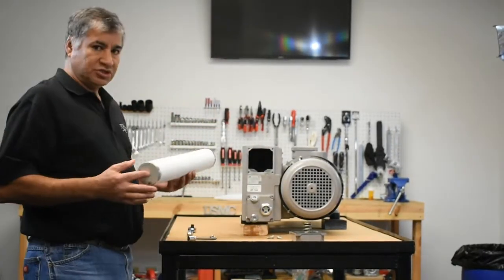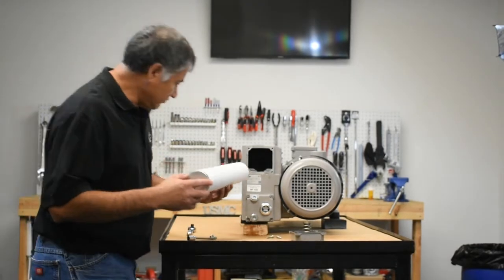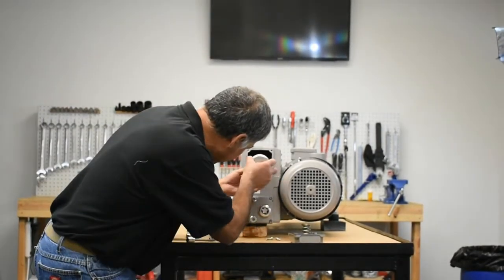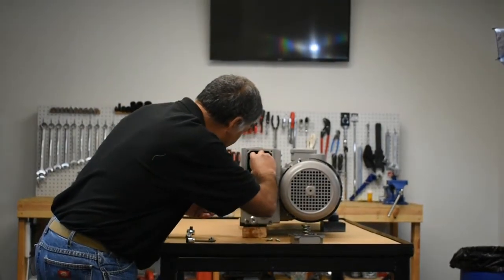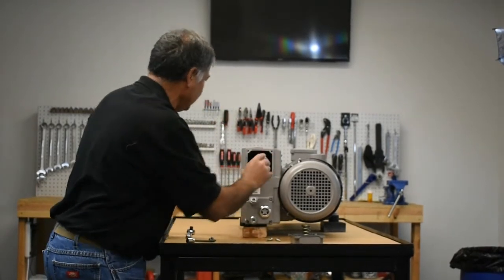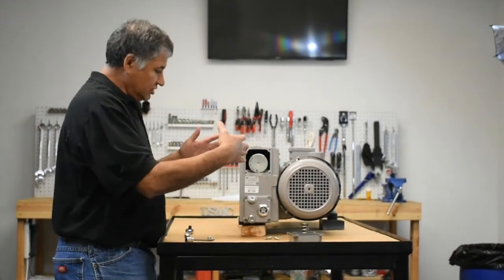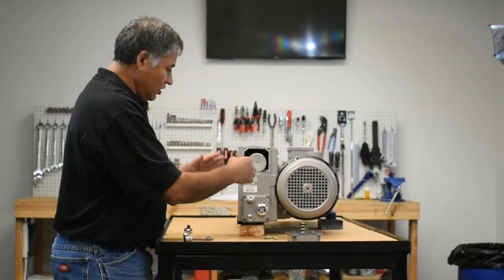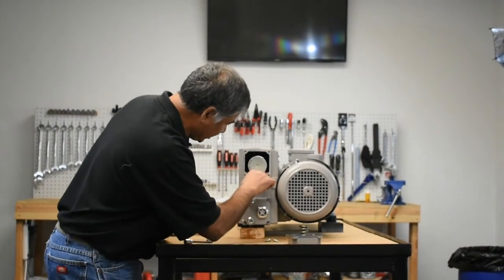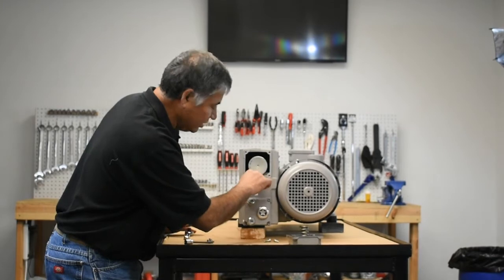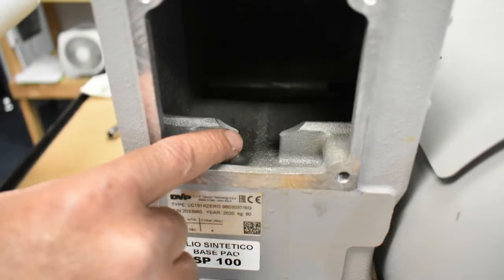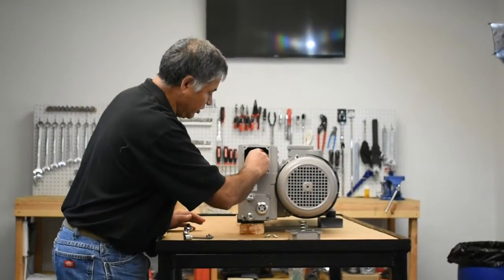So, once you get the old exhaust filter out, you take the new exhaust filter, slide it in there. There is a recess in the back that it fits into. It is funneled into that recessed area. Once it is in the recessed area, it will sit on a little saddle in the cast aluminum. Make sure your arrow is pointing down.